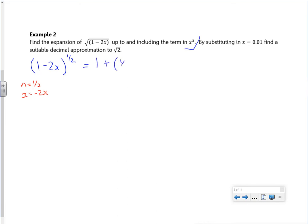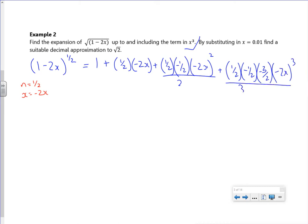So 1 plus nx, plus n(n minus 1)x squared over 2, plus n(n minus 1)(n minus 2)x cubed over 3 times 2.